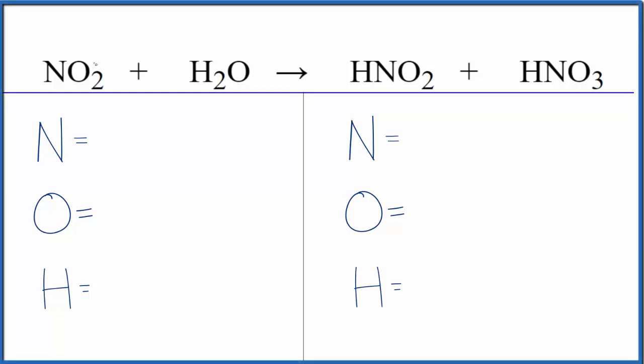In this video we'll balance the equation NO2 (nitrogen dioxide) plus water. Note that the products are HNO2 plus HNO3 - nitrous acid plus nitric acid. This is pretty unstable and often breaks down into nitrogen monoxide and more HNO3.